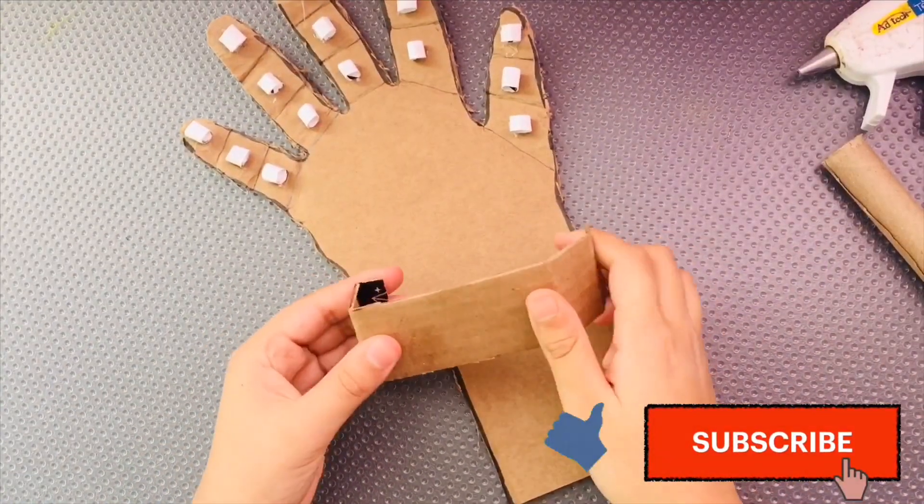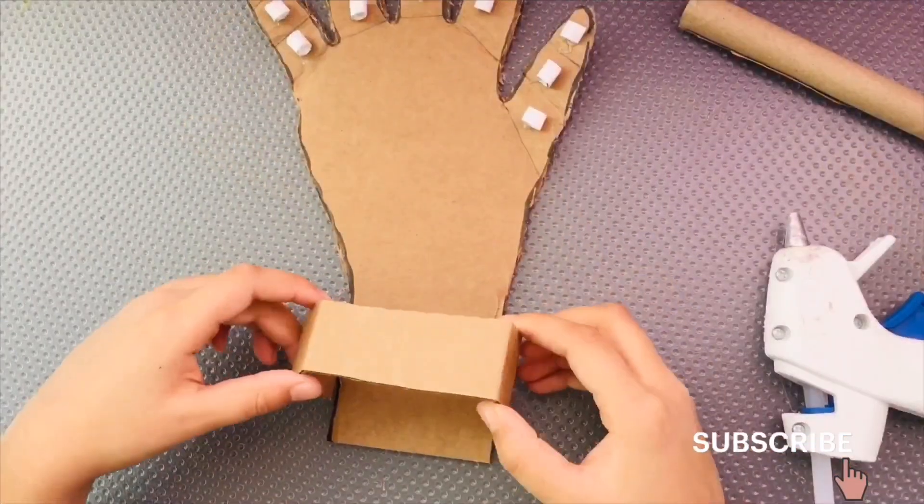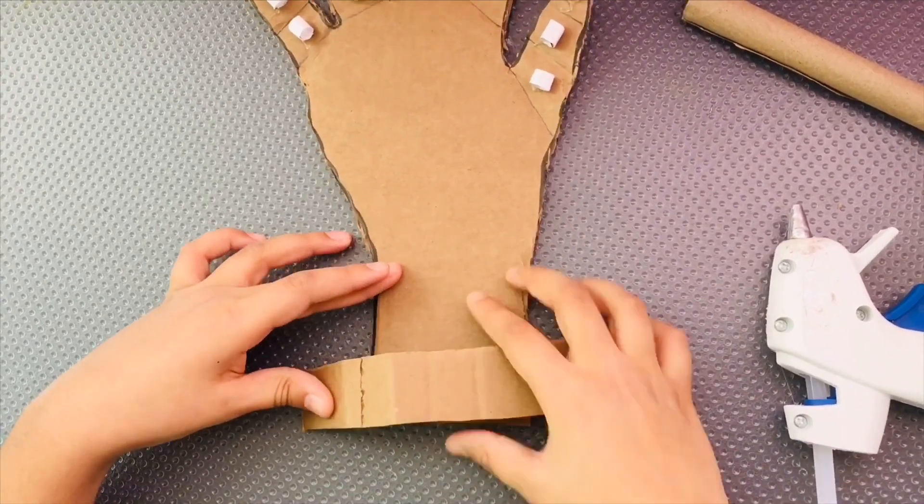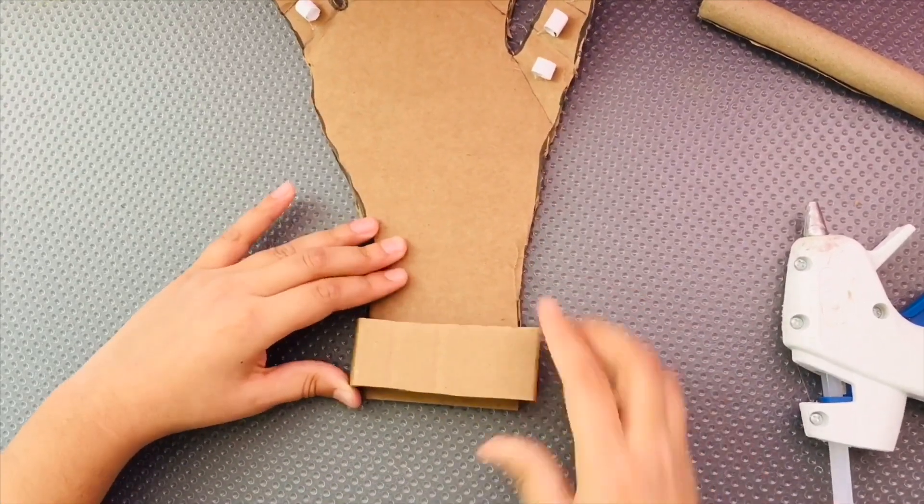Now, cut a rectangular piece of cardboard. Check your finger if it's going through. If it is, then put hot glue and stick it onto the cardboard. Like this.